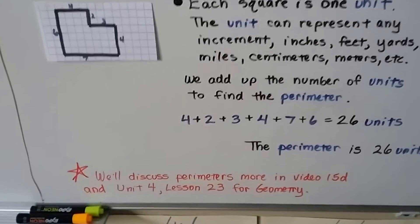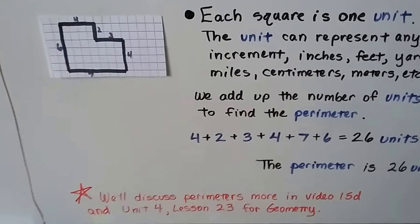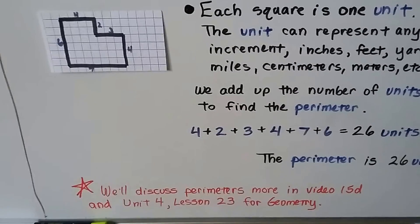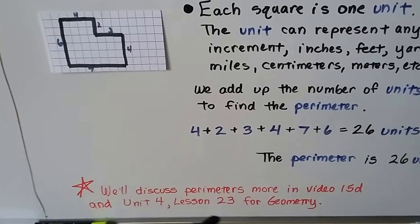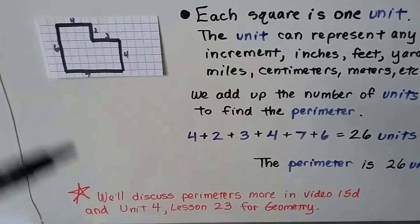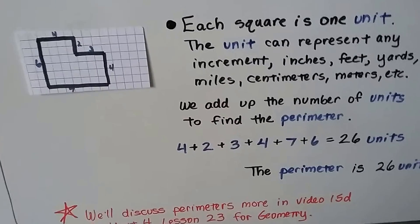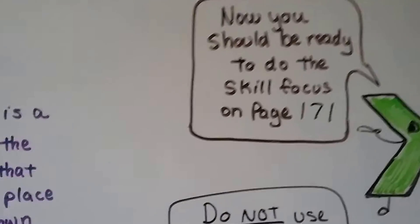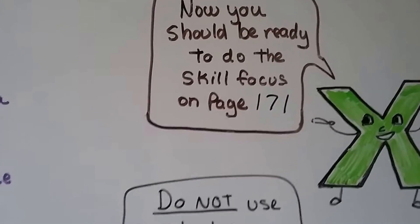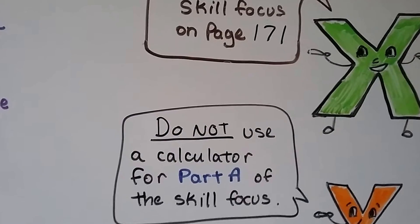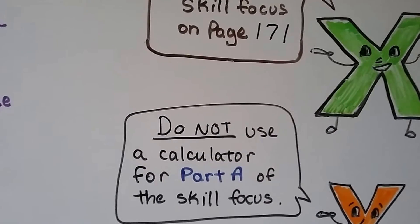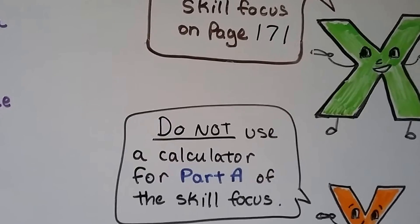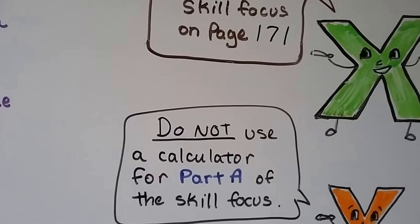So now you should be ready to do that skill focus on page 171. And you have to read the instructions. It says do not use a calculator for part A of the skill focus. You can use it for part B, but don't use it for part A.